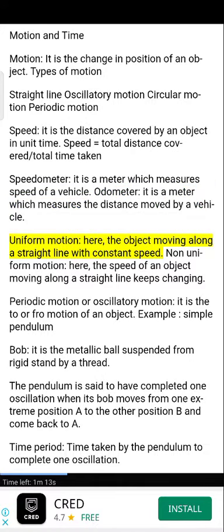Uniform motion: here, the object moving along a straight line with constant speed.